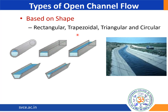The next type of open channel flow is based on shape. Based on shape, it is classified as rectangular, trapezoidal, triangular, and circular. Rectangular shape channels can be closed-end or open-ended, and these shapes of channels can be seen in stormwater drainage systems. Trapezoidal shape is the commonly used shape for irrigation channels in India. For circular shape, the example is wastewater drainage system sewer pipes.